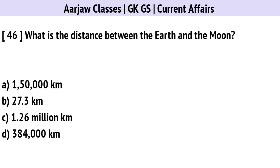What is the distance between the Earth and the Moon? Correct option is D: 384,000 km.